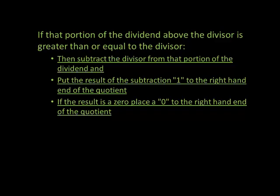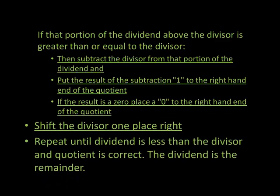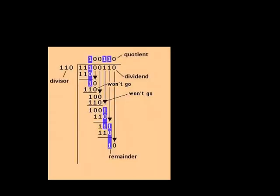Then we shift the divisor one place right and repeat until the dividend is less than the divisor. The quotient is correct and the dividend is the remainder. The illustration here shows the steps we should be working towards.